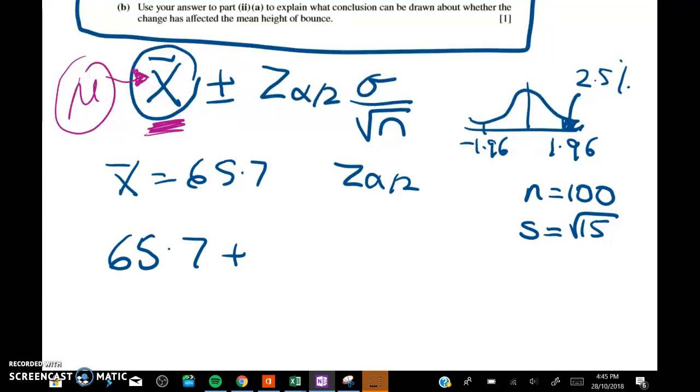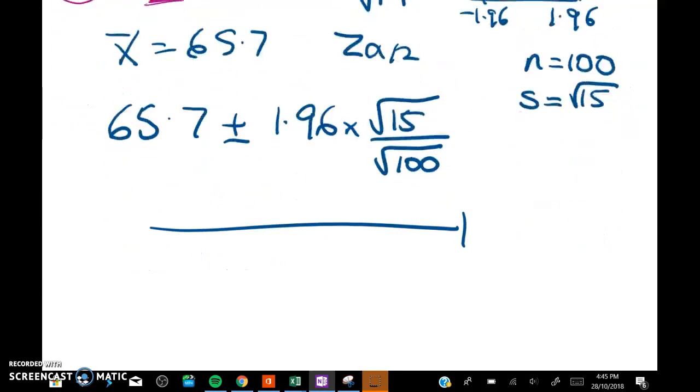So we set that up, we work it out like this. You can do those calculations and what you end up with—I'm actually just going off the mark schedule for those two numbers—but we get between 64.9 and 66.5. So that's my confidence interval.